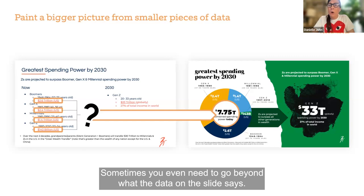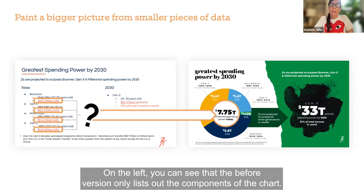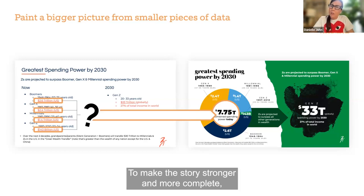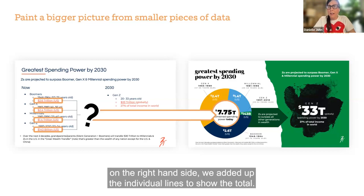Sometimes you even need to go beyond what the data on the slide says. On the left, you can see that the before version only lists out the components of the chart. To make the story stronger and more complete on the right-hand side, we added up the individual lines to show the total.